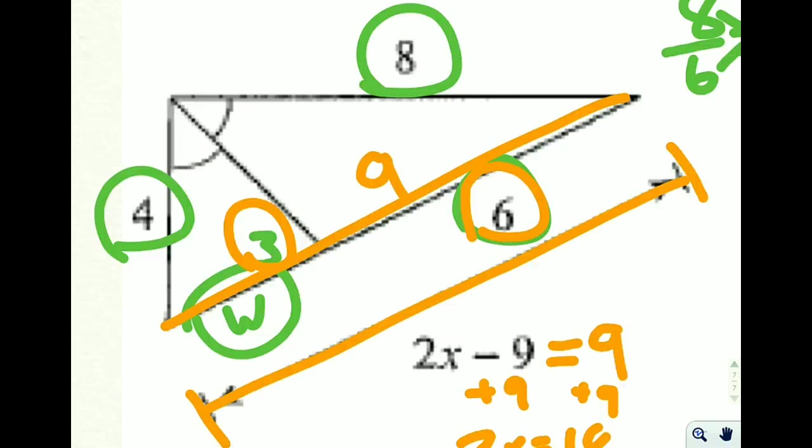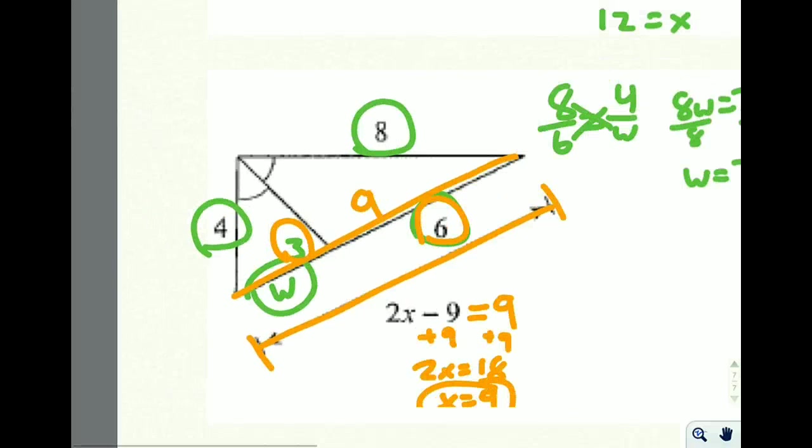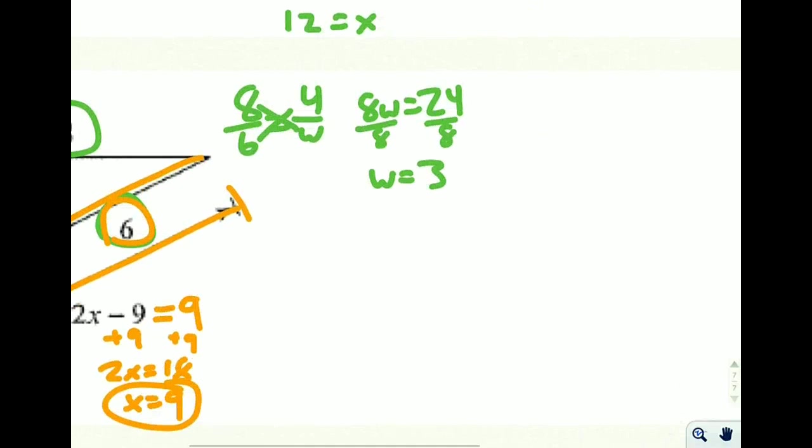So the way that we solve this one is we took the number that was easiest to get to, which was to figure out that that was 3, and then we solved the problem the rest of the way after that instead of trying to do some tricky algebra. There are other ways to solve it, but I think that's the easiest one.